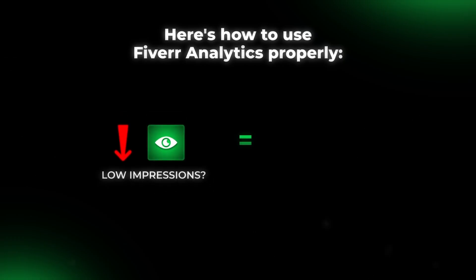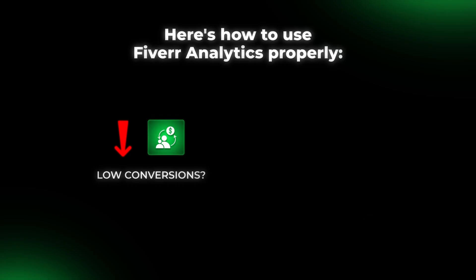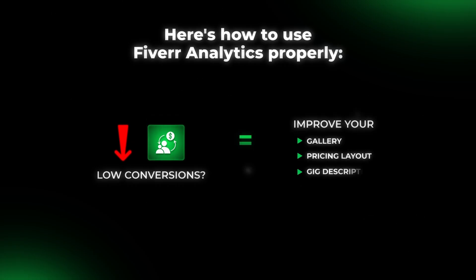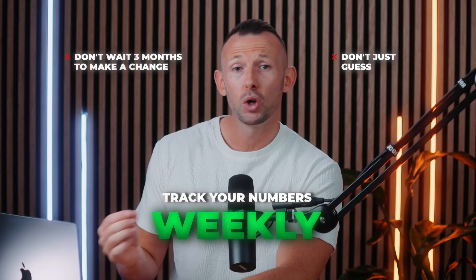Here's how to use Fiverr Analytics properly. Low impressions — fix your SEO: titles, tags, and category. Low clicks — tweak your title, thumbnail, or price. Low conversions — improve your gallery, pricing layout, and gig description. This data is simple, clear, and measurable, and you can check all of it inside your analytics dashboard. My advice: track your numbers weekly. Don't guess and don't wait three months to make a change. Set a reminder to log your impressions, clicks, and orders for each gig every Sunday. After two or three weeks, you'll start to see patterns — and that's how you turn a dead gig into one that generates consistent orders.